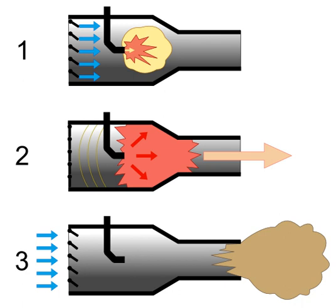A pulsejet engine is a type of jet engine in which combustion occurs in pulses. A pulsejet engine can be made with few or no moving parts, and is capable of running statically — it does not need to have air forced into its inlet typically by forward motion. Pulsejet engines are a lightweight form of jet propulsion, but usually have a poor compression ratio, and hence give a low specific impulse.